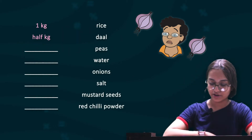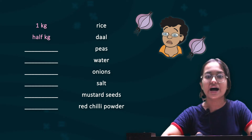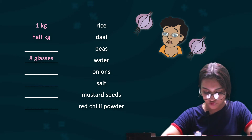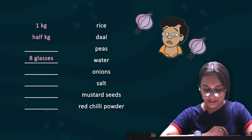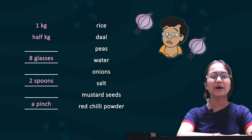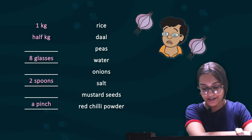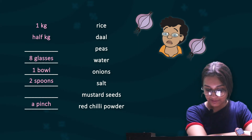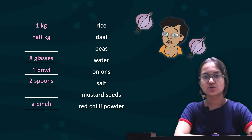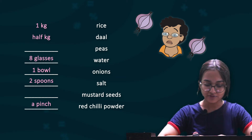Help him match the things with their correct amounts. For rice the correct quantity will be 1 kg, for dal it will be half kg. For water it will be 8 glasses. For salt it can be 2 spoons, and for red chilli powder a pinch, because we use salt more compared to red chilli powder. Then 1 bowl of onions. What we are left with are 2 pieces and a spoon, which you need to write in front of the item you feel they are suitable for.